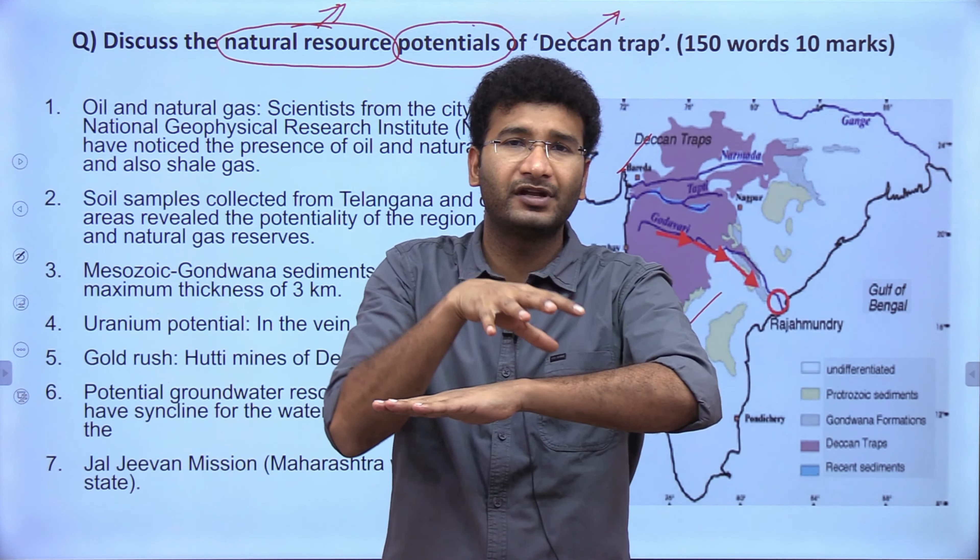Solar heating is another reason for ocean current movement. Solar heating creates a pressure gradient or temperature gradient force within the water. Polar regions have cold water while water near the equator is warm — this temperature gradient drives ocean circulation.